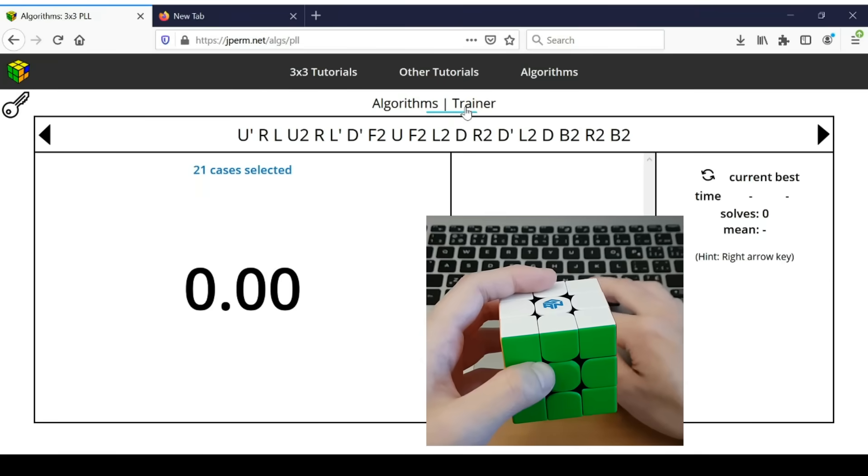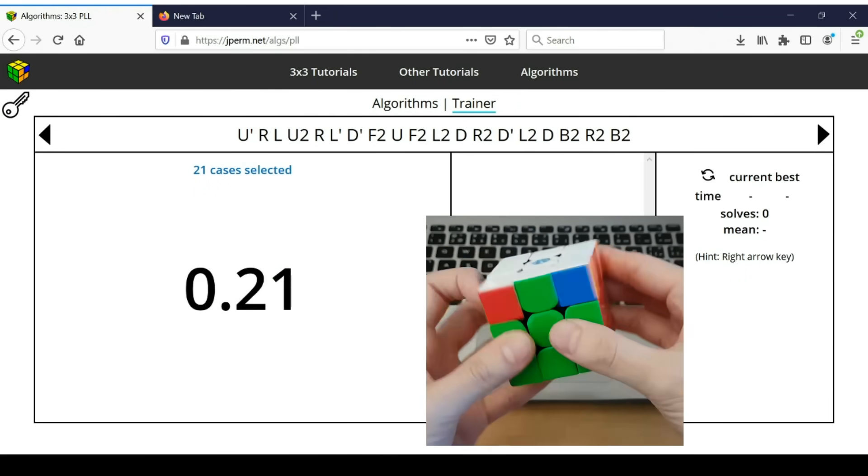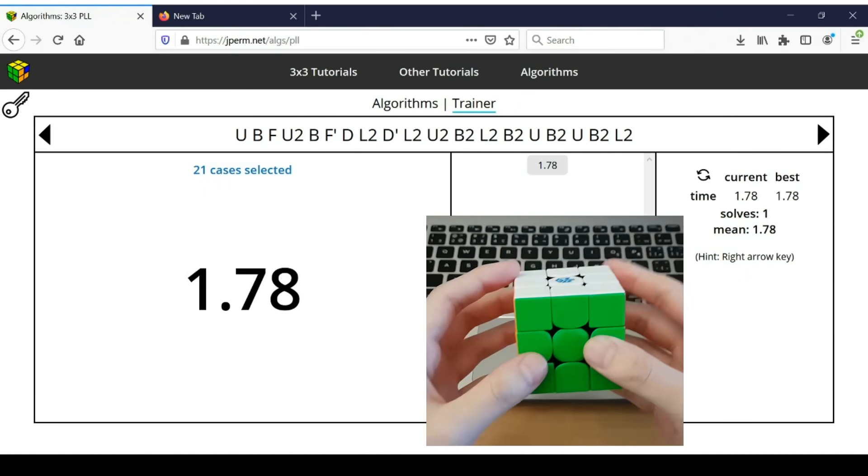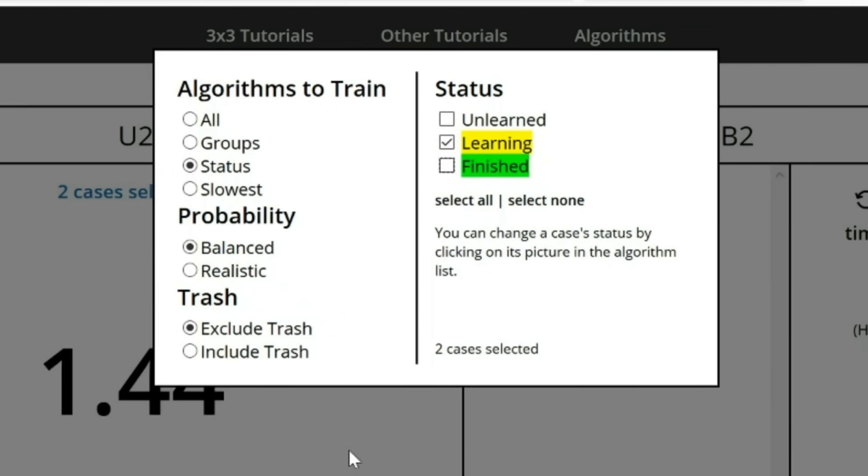Then you can head over to the trainer, which by default can show you any algorithm in this category. So we are in PLL, so it could give me any PLL as my next one. But you can customize this to be only certain groups that you've learned, or only the yellow cases which are the ones you are working on, or the ones you're working on, and the ones you've finished.